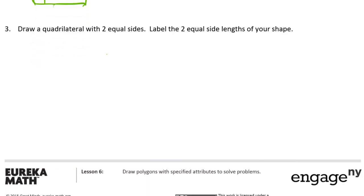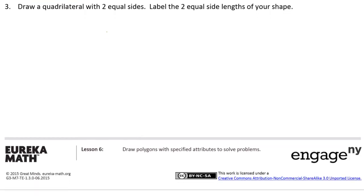Draw a quadrilateral with two equal sides and label the two equal side lengths of your shape. So this is where you really need to have a ruler, because you have to show, you have to know how long the sides are.